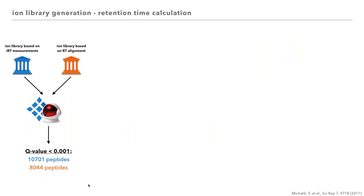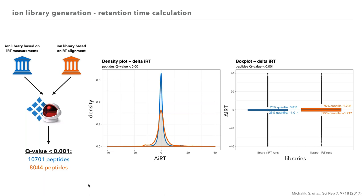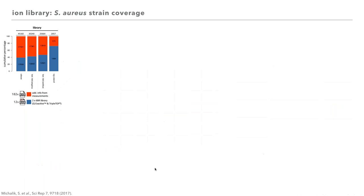To evaluate our strategy, we generated on one hand a library only from measurements with iRT, and on the other hand a library consisting only of calculated iRT values — so from runs without iRT where the iRT was calculated. We performed DIA-MS analysis for both libraries and extracted the delta iRT, which is a measure of retention time variation. Strikingly, we detected only an increased iRT variation of approximately one in the 25th and 75th percentile quantile, depicted in the box plot. This is a very good result from this approach.